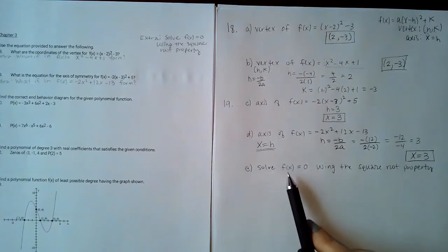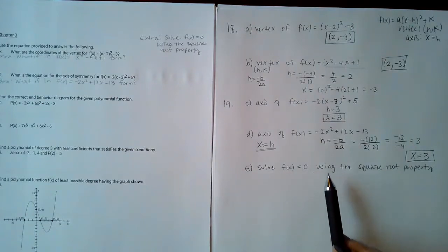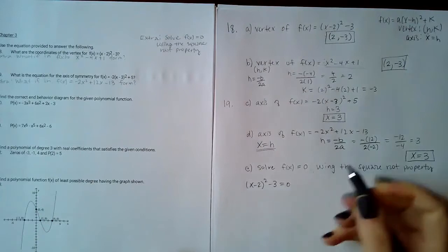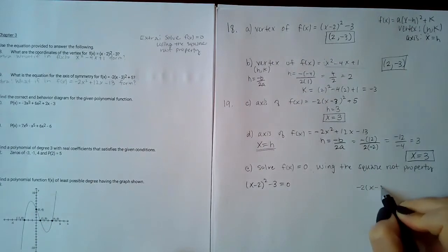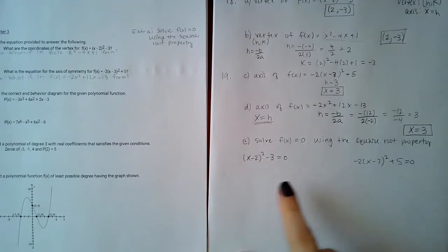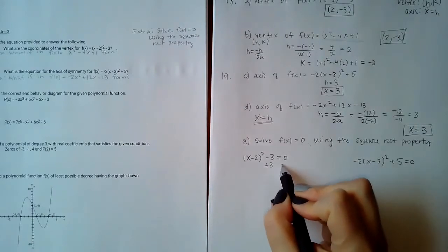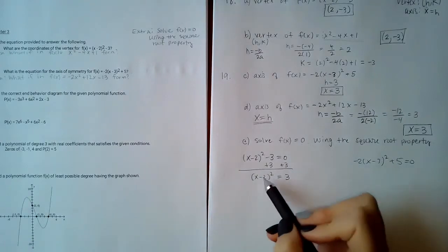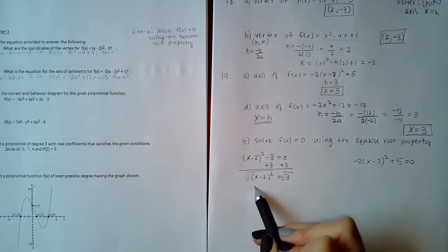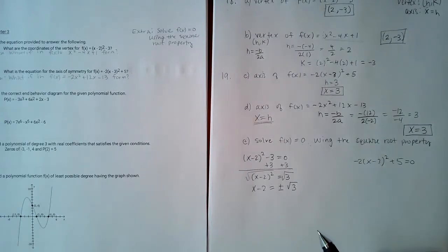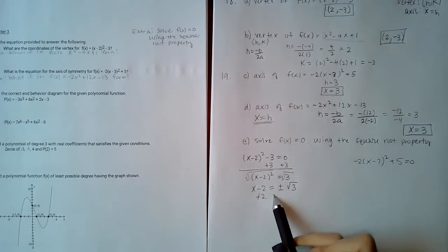Part E says solve for f(x) = 0 using the square root property. I'm going to do that for both functions — one where there's a number outside the parentheses and one where there's not. To use the square root property, I first have to get the squared term by itself, then take the square root of both sides. The power goes away and I get plus or minus the square root of 3. There's no simplification for √3, so I add 2 to both sides.